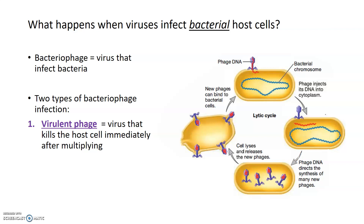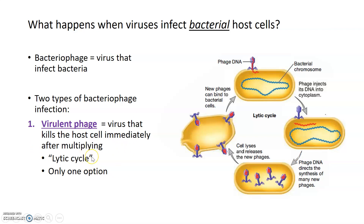What happens when a virus infects a bacterial host? Viruses that infect bacteria are known as bacteriophages, and there are two types of bacteriophage infection. The first is known as a virulent phage infection. Virulent phages are viruses that kill the host cell immediately after they finish multiplying through their life cycle. This killing of the host cell after multiplication is known as a lytic cycle, and virulent phages only have this one life cycle option.